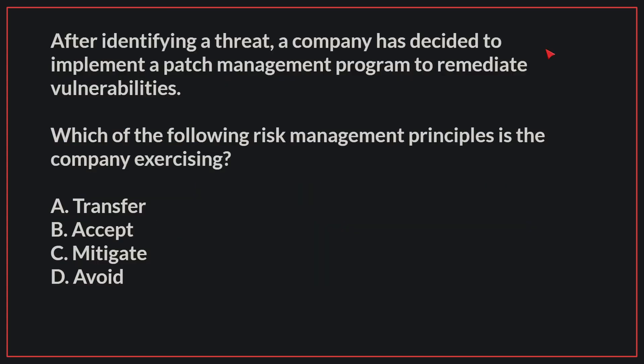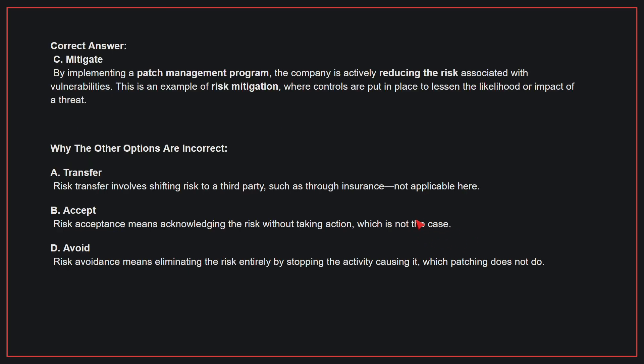After identifying a threat, a company has decided to implement a patch management program to remediate vulnerabilities. Which of the following risk management principles is the company exercising? The correct answer is C. Mitigate. By implementing a patch management program, the company is actively reducing the risk associated with vulnerabilities. This is an example of risk mitigation, where controls are put in place to lessen the likelihood or impact of a threat.